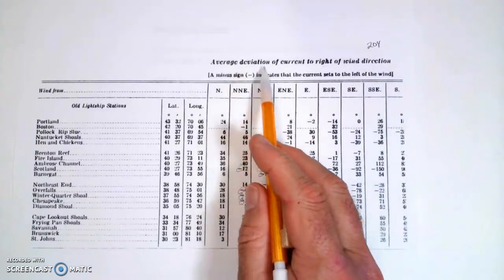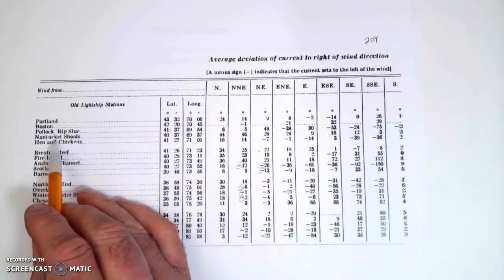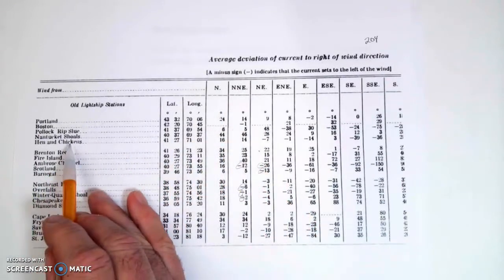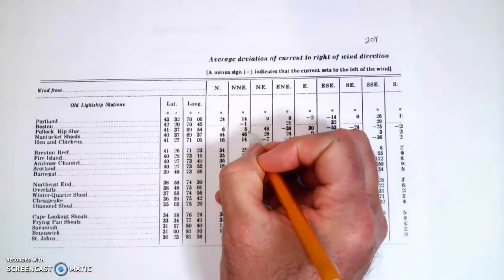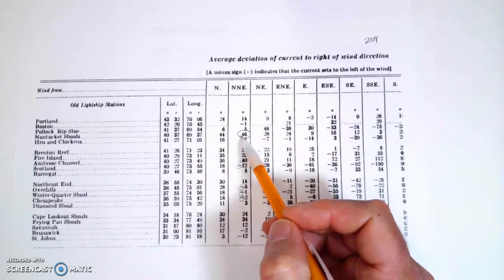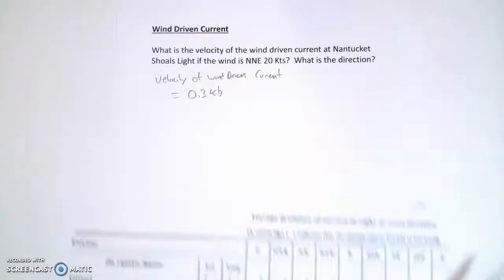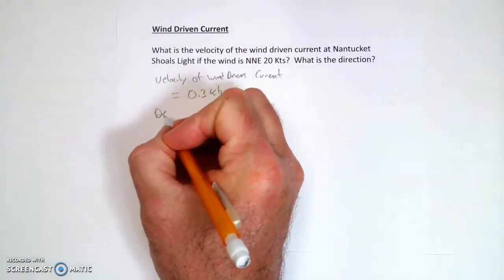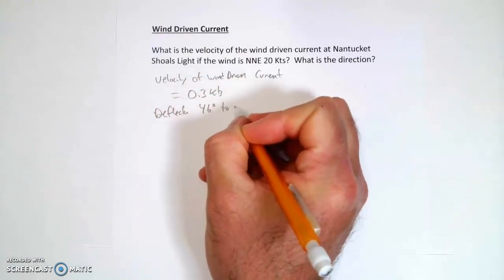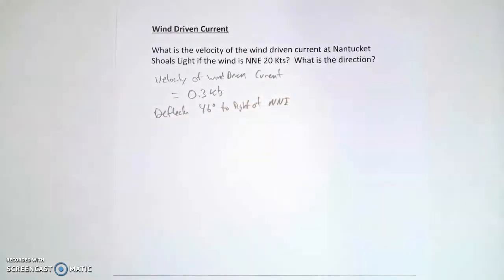So our wind is going to be, our wind is going to blow out of the north-northeast, and if we are taking it on Nantucket Shoals, north-northeast, our wind-driven current should be 46, it's not a minus, so it's to the right, 46 degrees to the right of north-northeast. So our deflected wind, our deflection, will be 46 degrees to the right of north-northeast. Great.